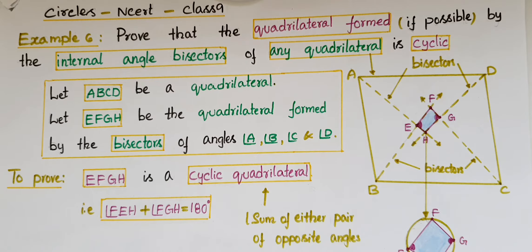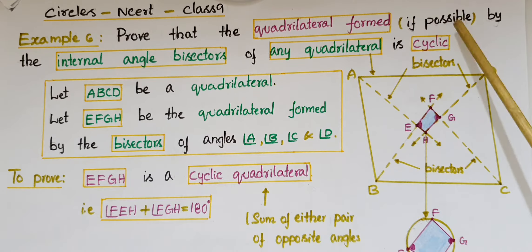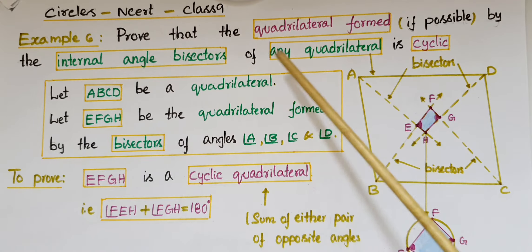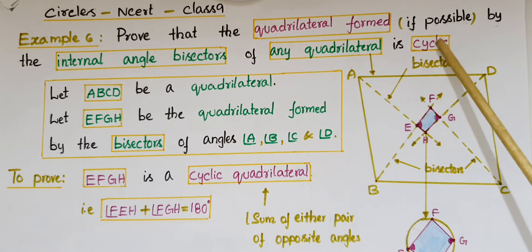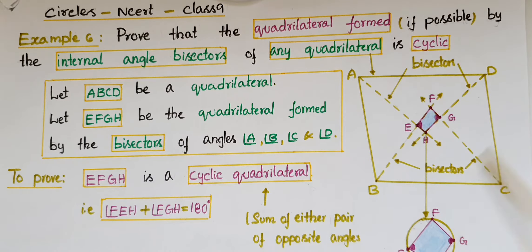Hello everyone, today I am going to tell the solution of Example 6 from the Circles chapter from NCERT Class 9. Prove that the quadrilateral formed, if possible, by the internal angle bisectors of any quadrilateral is cyclic.